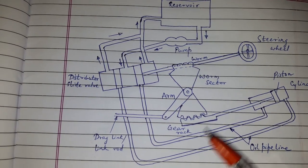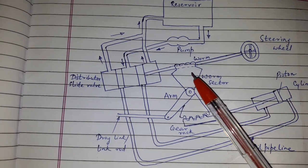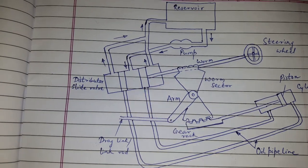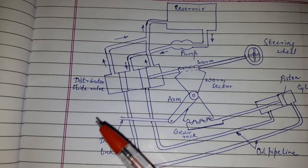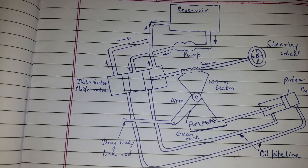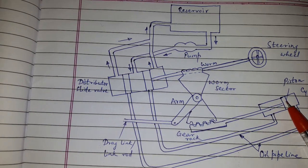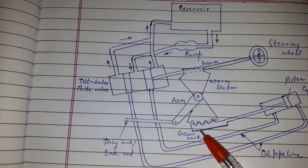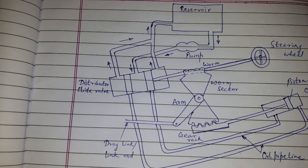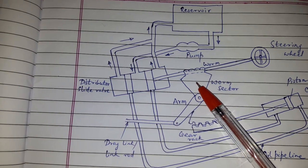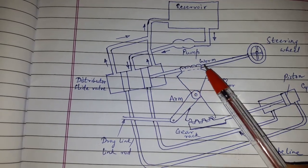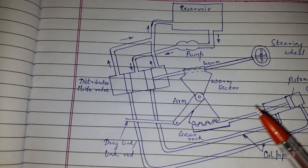The arm is mounted on the worm sector and is connected to the drag link or link rod. When the steering wheel is turned, the worm turns the sector of the worm wheel and the arm. The movement of the distributor slide valve in the cylinder admits oil in the booster cylinder through the pipeline. The piston in the booster cylinder turns the road wheels via gear rack, worm sector, arm, and link rod. At the same time, the worm sector acts upon the worm and shifts it together with the distributor slide valve to its initial position, stopping the piston in the booster cylinder.